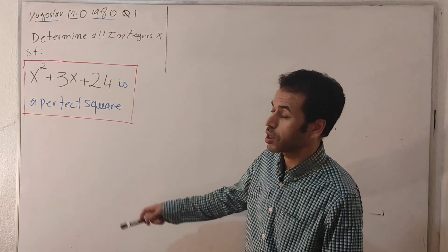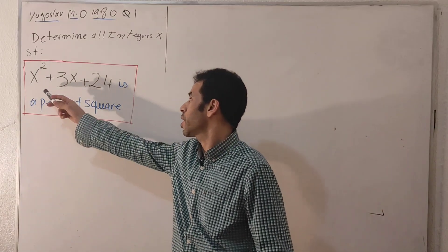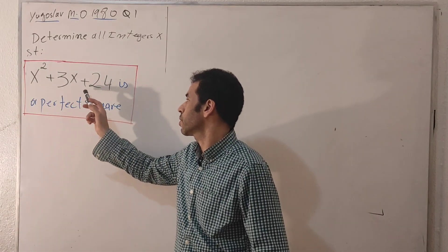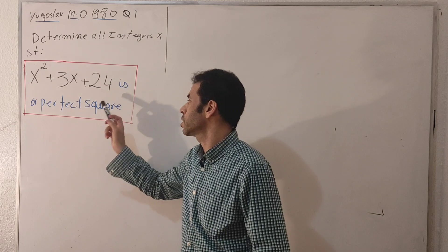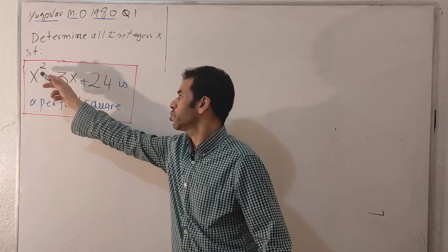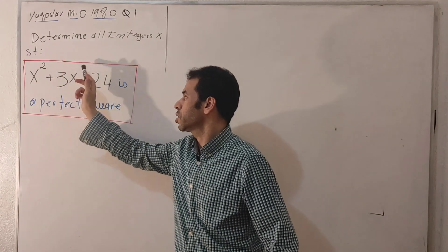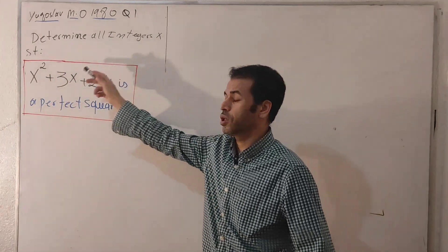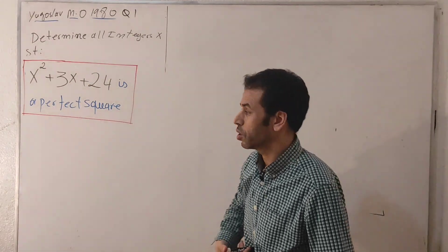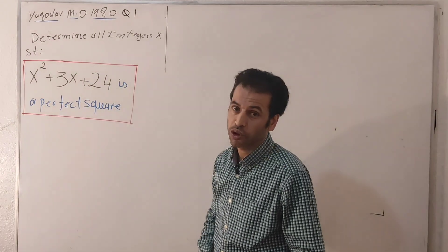We have the following setup: x squared plus 3x plus 24 is a perfect square. We are going to determine x in order to have the whole expression be a perfect square.